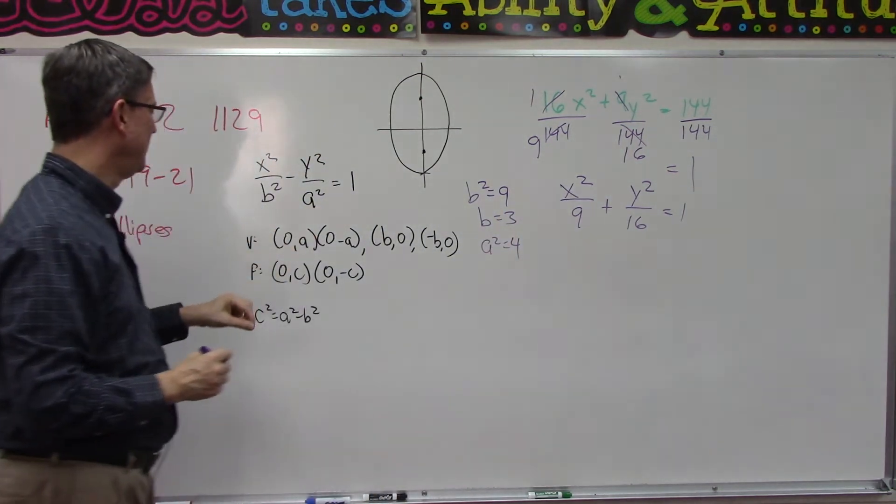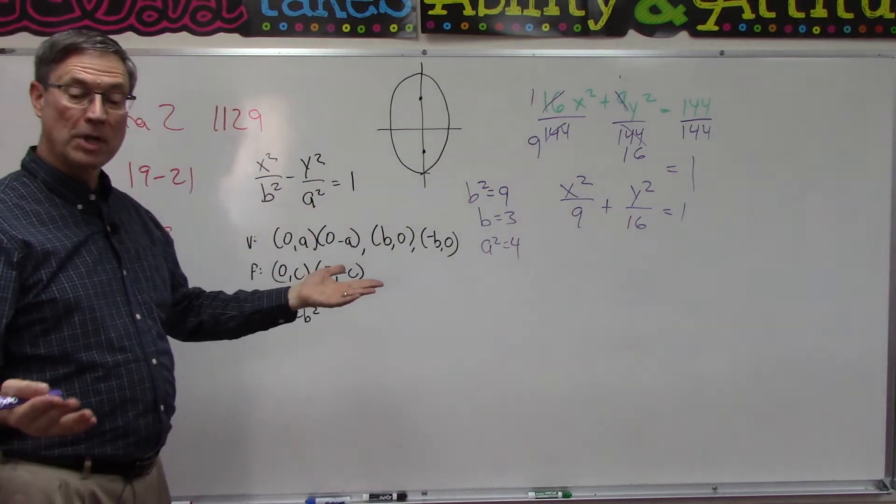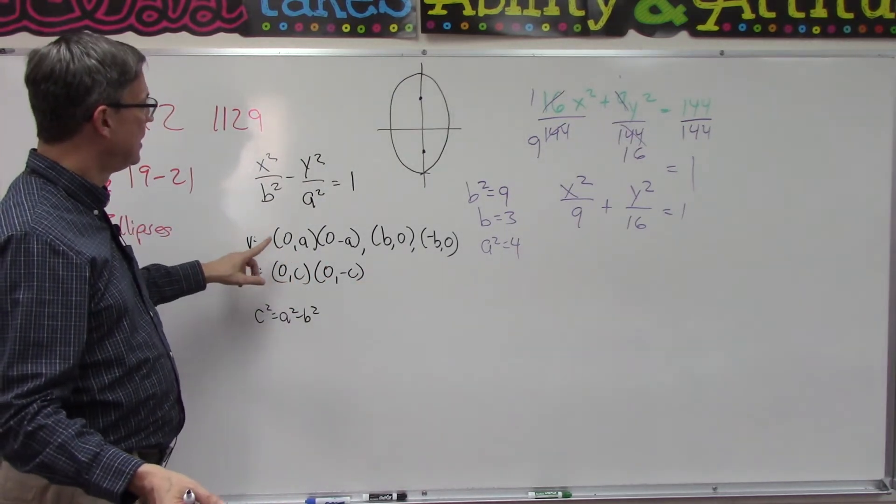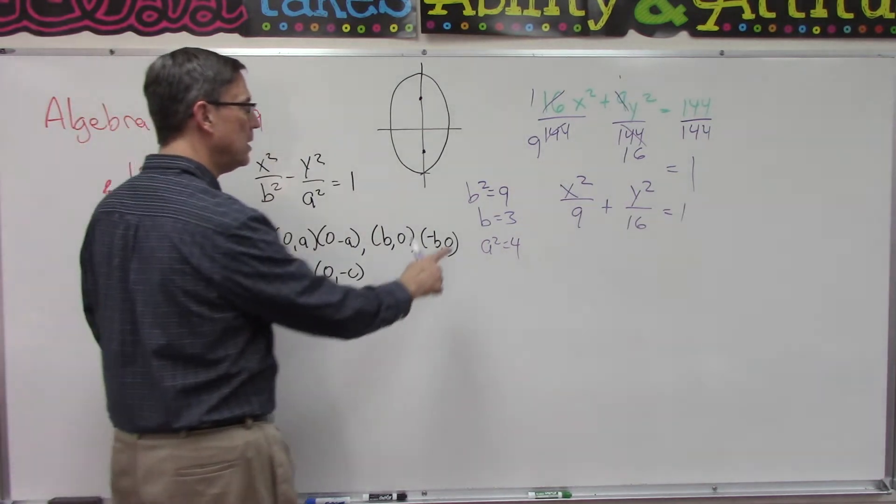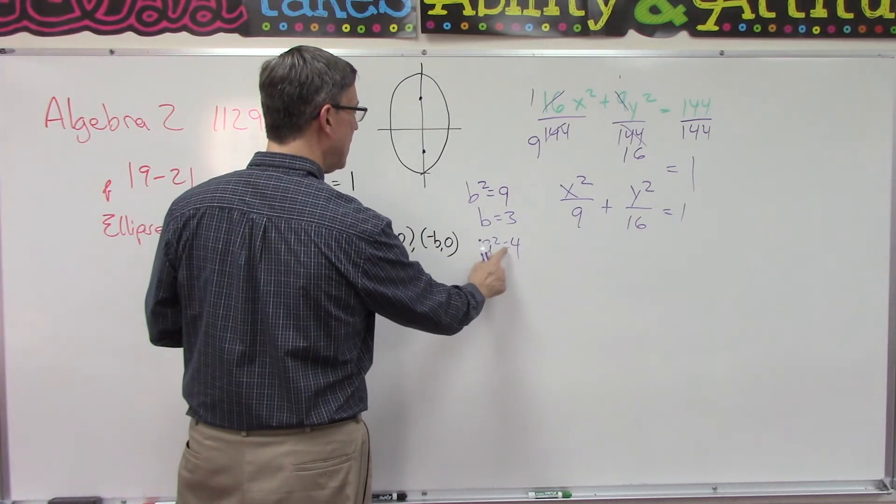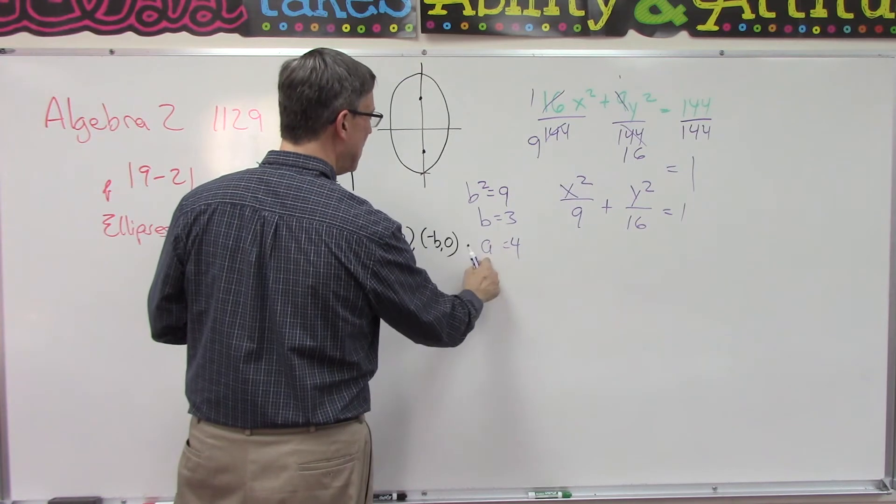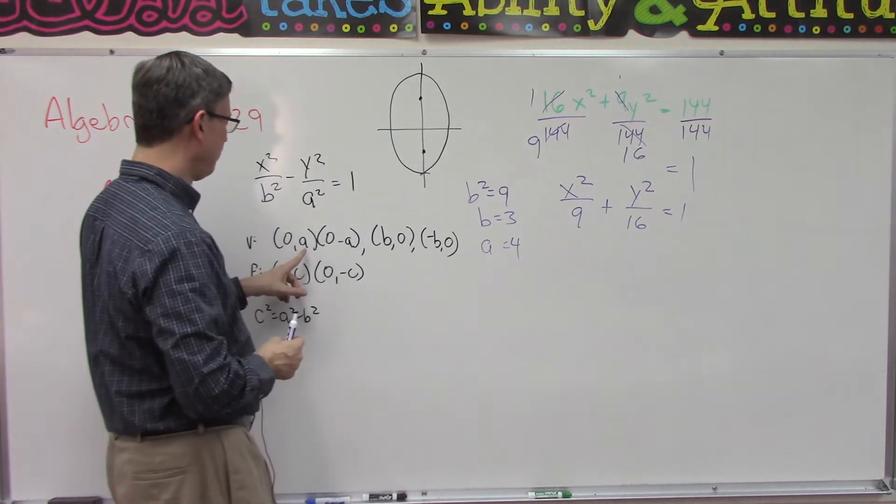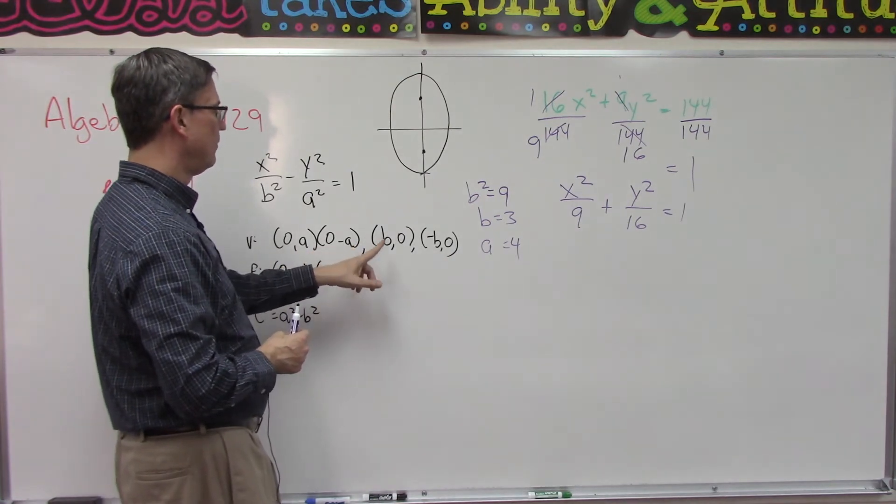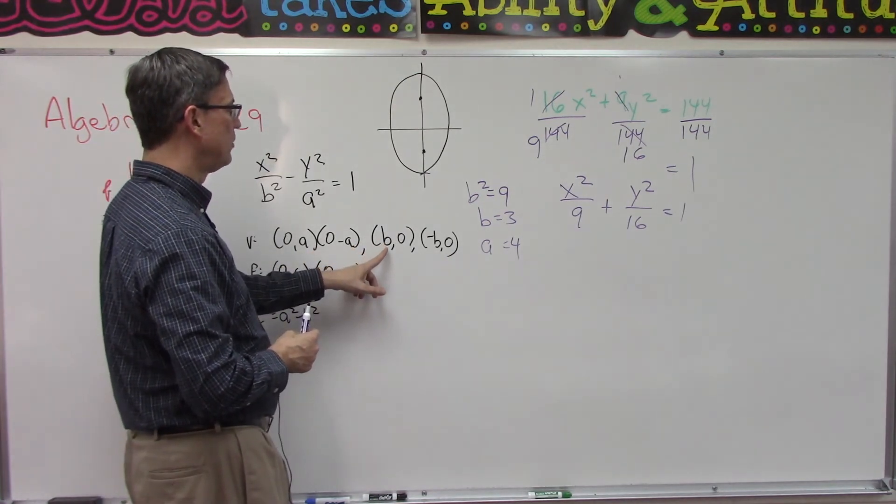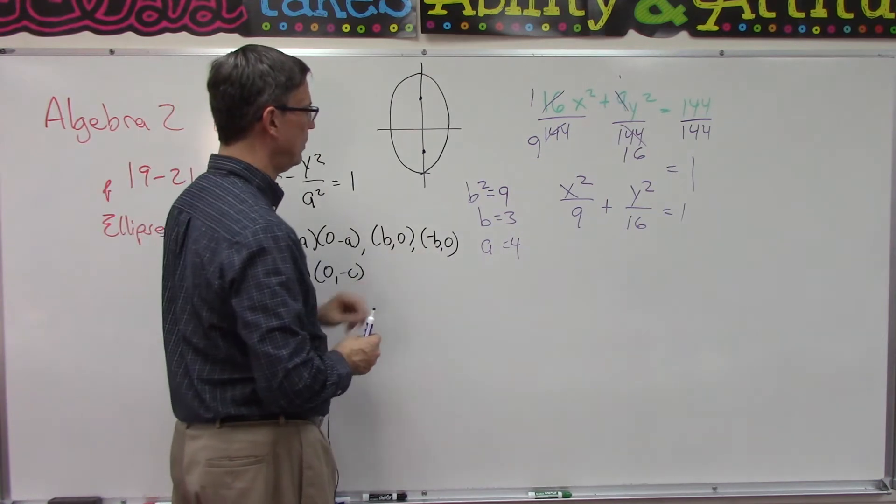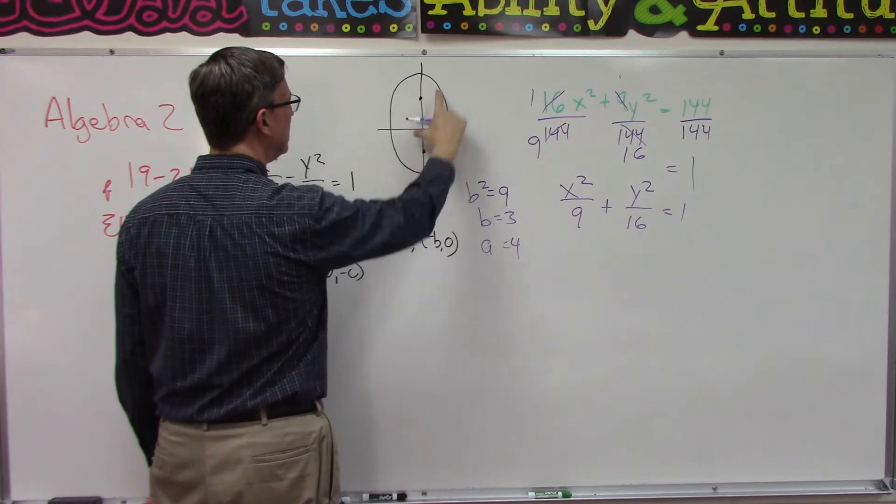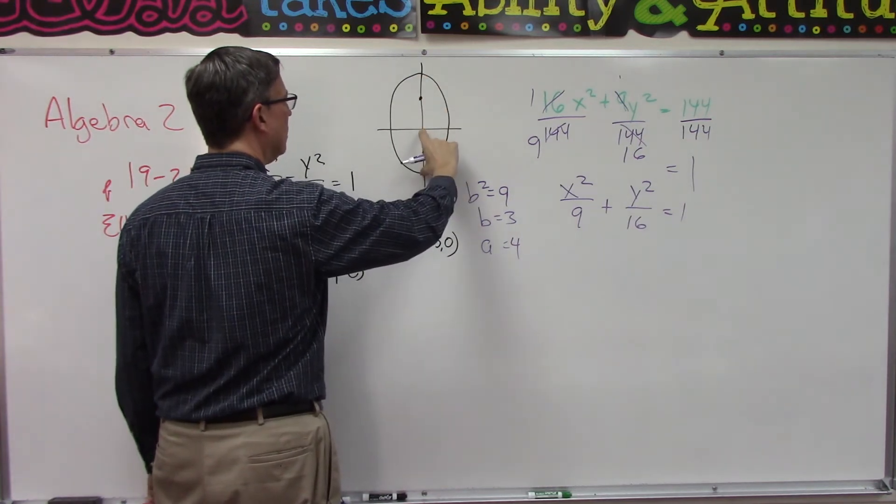That's the hardest part. From that point on, you can find the vertices by taking the value for a. A squared was 16, so a is 4. Take the 4 and plug it in: (0,4), (0,-4), (3,0), and (-3,0). Notice that the 3s are a little bit closer and this is 4, a little bit longer of an axis.